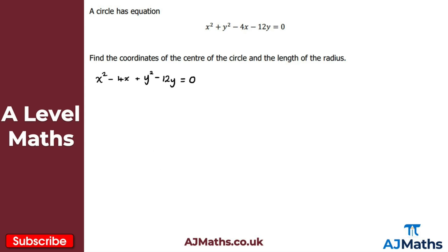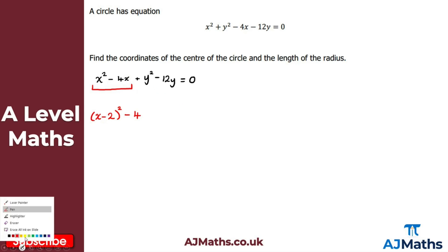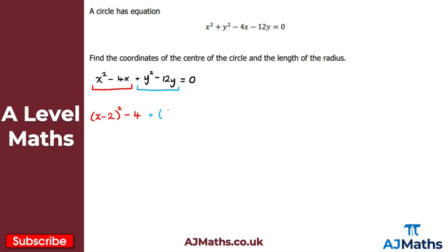We'll complete the square on each part. For the x part: x minus 2, all squared, minus 4. For the y part: y minus 6, all squared, minus 36.